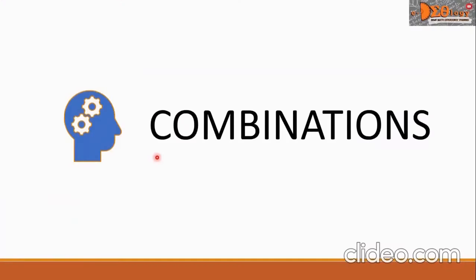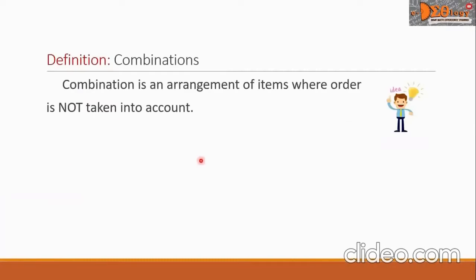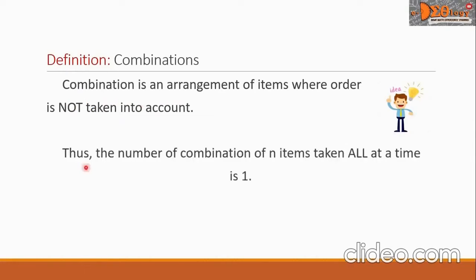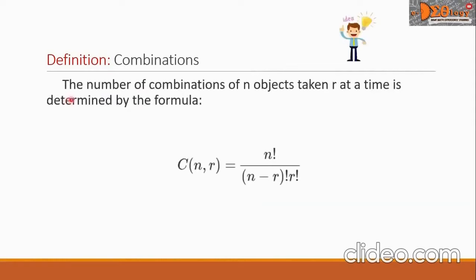Hi everyone. Today we are going to study combinations. Combination is an arrangement of items where order is not taken into account. The number of combinations of n items taken all at a time is 1. The number of combinations of n objects taken r at a time is given by C(n, r) equals n factorial over (n minus r) factorial times r factorial.